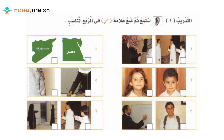Now let's go over the answers. Number one is the picture on the right side: هذا. Number two is the picture on the left side: أخت. Number three is the picture on the left side: مدرس. Number four is the picture on the right side: مصر. Number five is the picture on the left side: طبيبة. Number six is the picture on the left side: أنت.